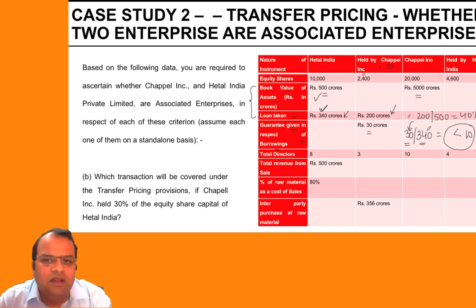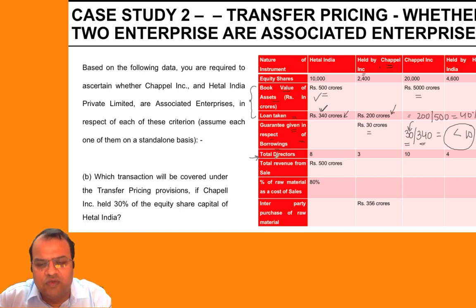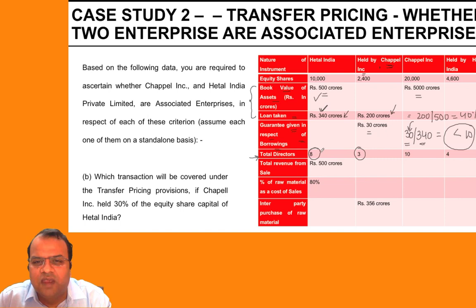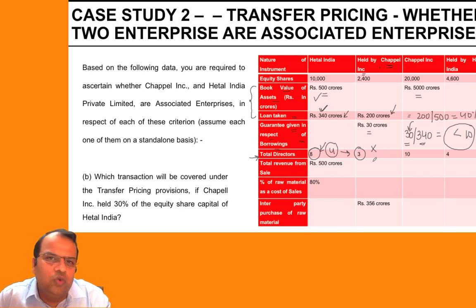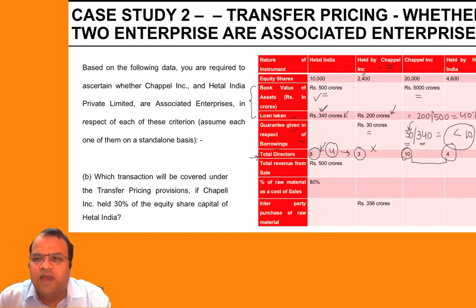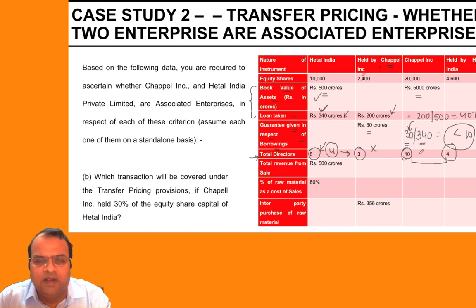The next criteria concerns directors. The total number of directors of Hathal India is 8, out of which 3 are appointed by Chapel Link. The condition requires more than half the board to be appointed by the other enterprise — half of 8 is 4, so 3 is less than half. On Chapel Link's side, 10 directors total, with 4 appointed by Hathal India, which is also less than half. Therefore, the two will not be related parties on the director appointment criteria.